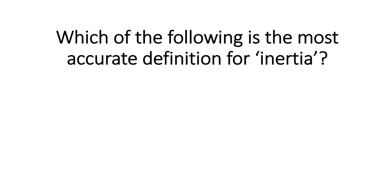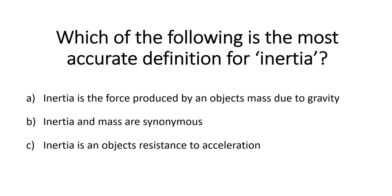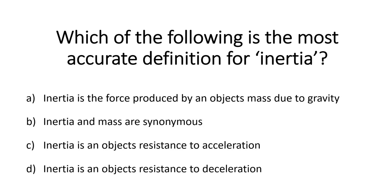Which of the following would be the most accurate definition for inertia? Is it A. Inertia is the force produced by the body's mass due to gravity. B. Inertia and mass are synonymous — they basically mean the same thing. C. Inertia represents an object's resistance to acceleration. Or D. Inertia represents an object's resistance to deceleration. Have a think and we'll move on to our next question.